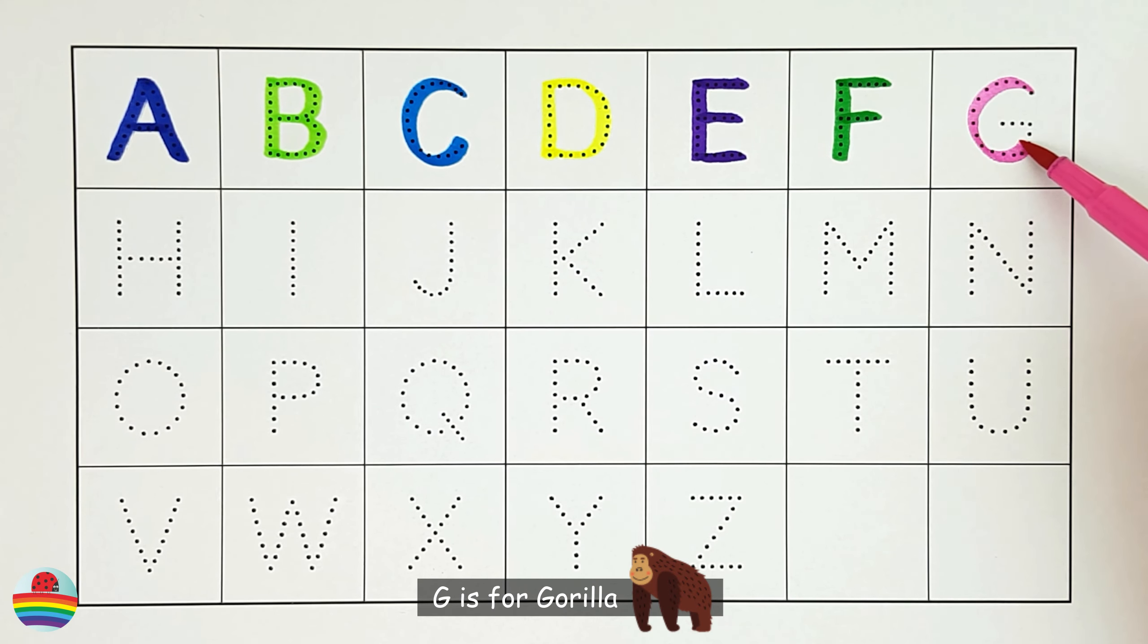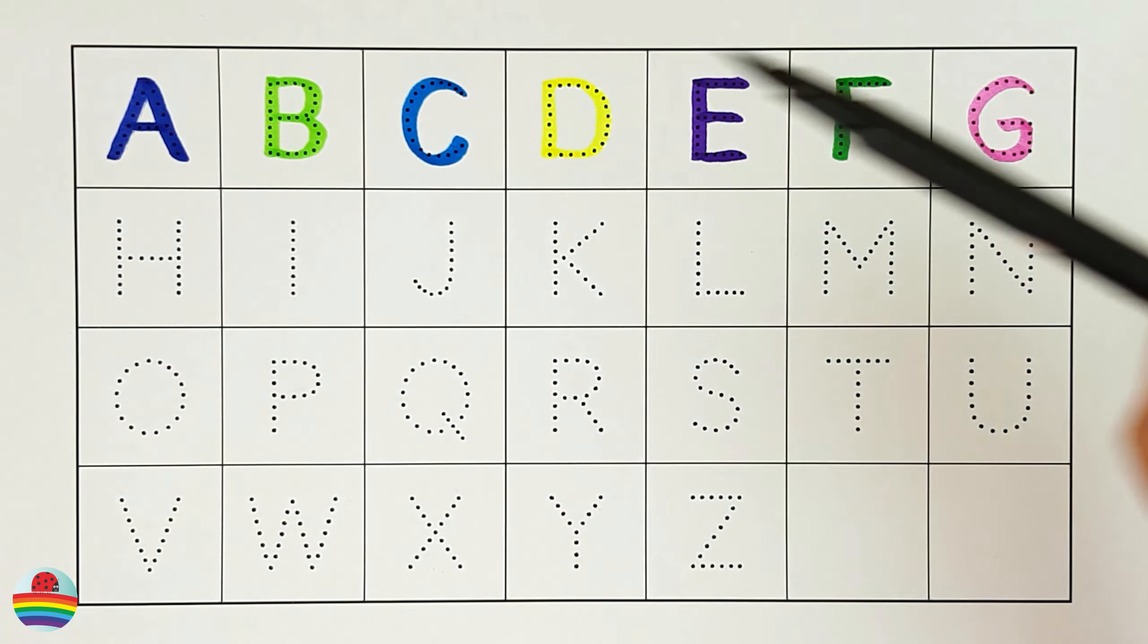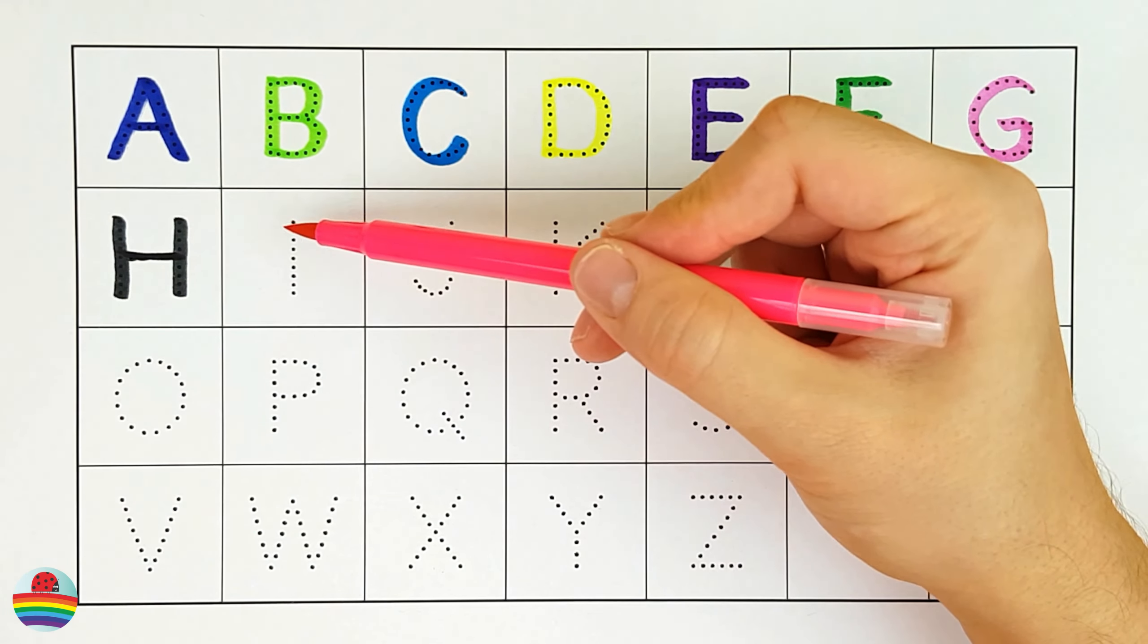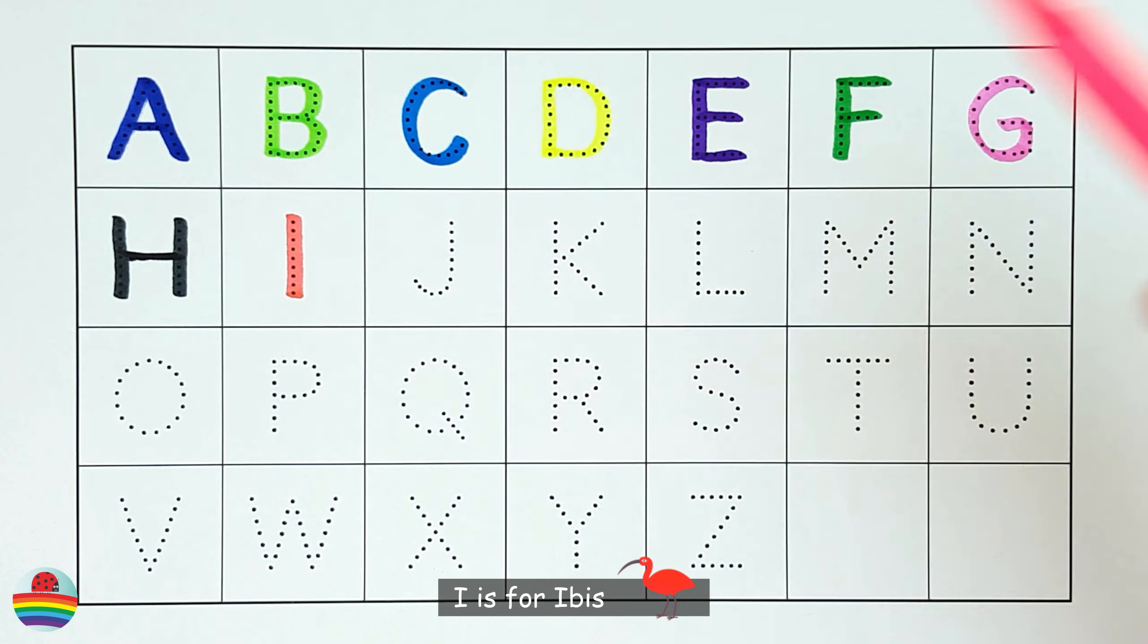G. G is for Gorilla. G. H. H is for Hedgehog. H. I. I is for Ibis. I.